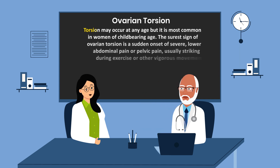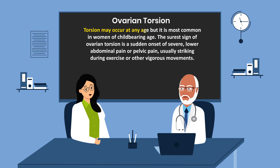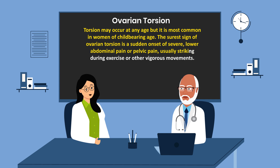Torsion may occur at any age but it is most common in women of childbearing age. The surest sign of ovarian torsion is a sudden onset of severe low abdominal pain or pelvic pain, usually striking during exercise or other vigorous movements.